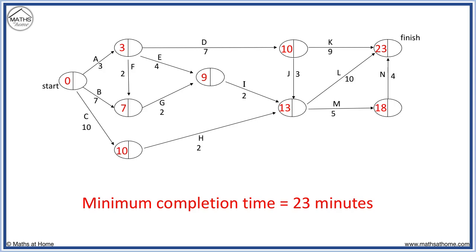The minimum completion time is always the longest path through the network. The other shorter tasks can be completed while we wait for these longer tasks to be completed.